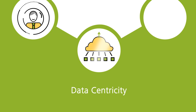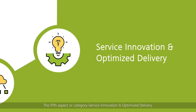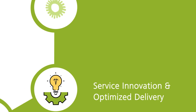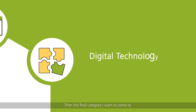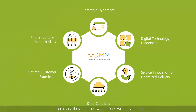The fifth category, service innovation and optimized delivery, has three aspects to it. With a digital business, the focus will very much be on delivering via an ecosystem. The final category is digital technology leadership — and although you might think technology should lead digital transformation, it actually comes last. Together, these six categories give a comprehensive view of the digital maturity of an organization.